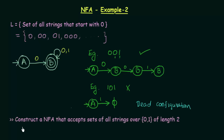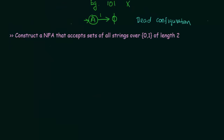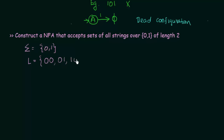Now let's see another example: construct an NFA that accepts the set of all strings over {0, 1} of length 2. The elements of this language are 00, 01, 10, and 11. Let's see how to construct the NFA for this.